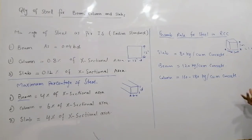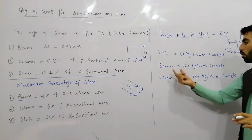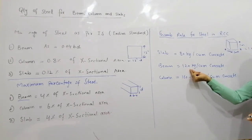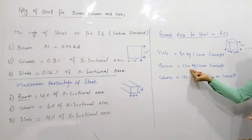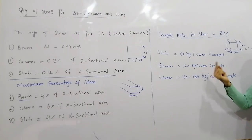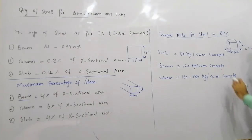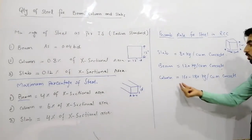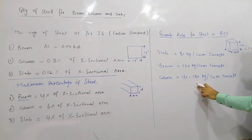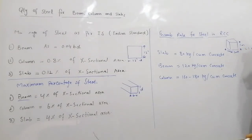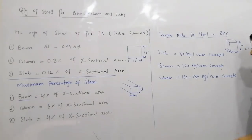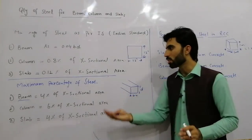For an RCC beam, by thumb rule, take 120 kg of steel per cubic meter of concrete. For a column, take 160 to 180 kg of steel per cubic meter of concrete.